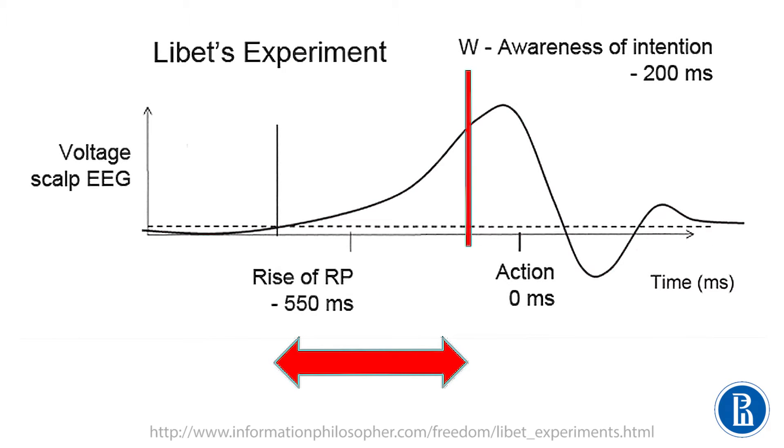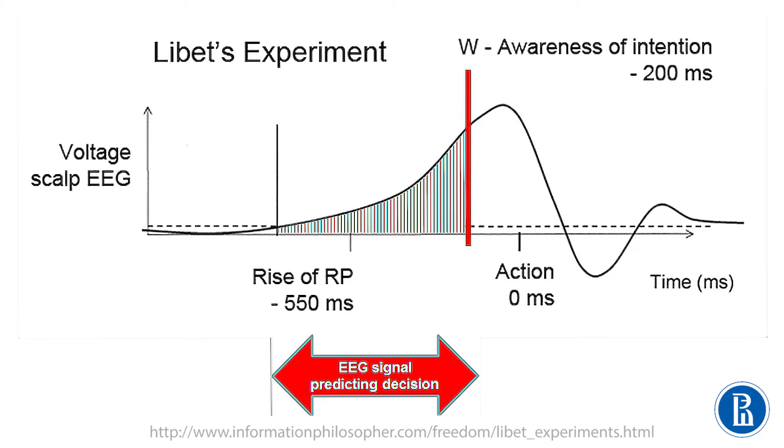Red line, vertical red line, indicates the moment when subjects became aware about their decision to move finger. But you see that brain signal starts far before people become aware of their intention. A couple of hundred milliseconds before we become aware of our intention, we can predict the decision by brain activity.